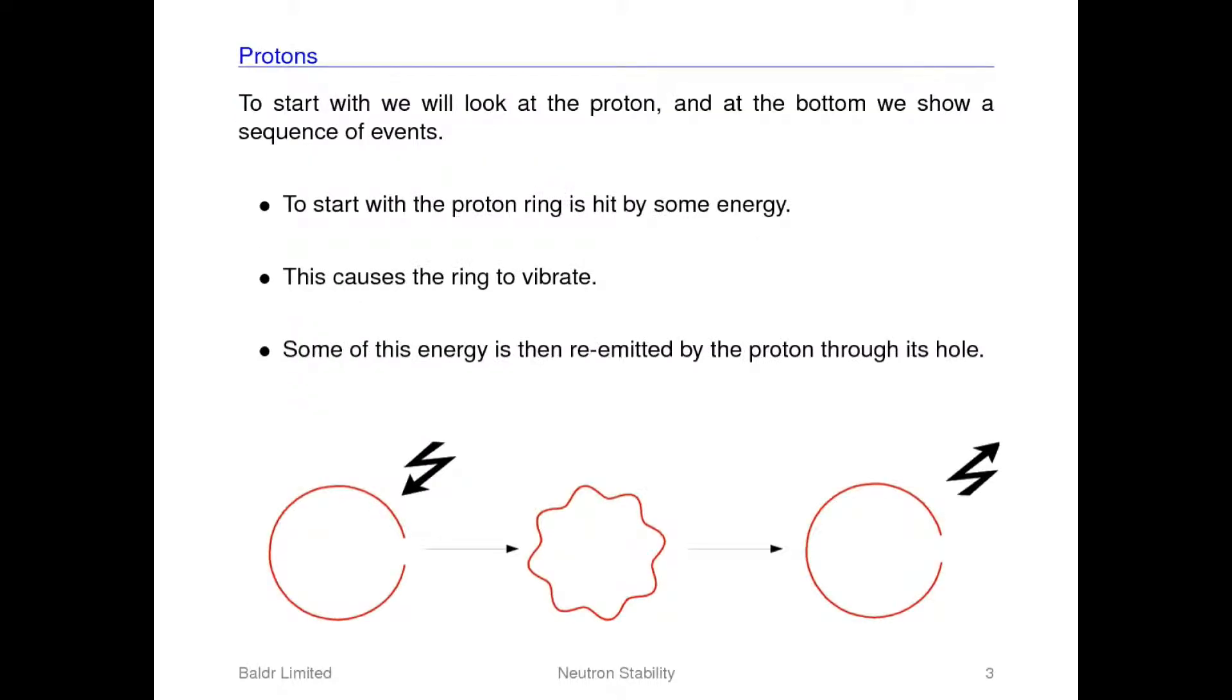To start with we will look at protons and see why they are always stable. At the bottom here we've got a sequence of images which help to explain this. In the first image on the left we've got our standard proton ring and it is about to be hit by some energy shown by the lightning bolt. When this energy has been absorbed by the proton it causes the ring to vibrate as shown in the second image.